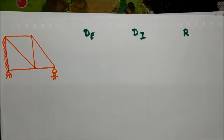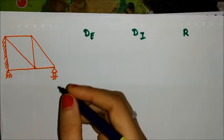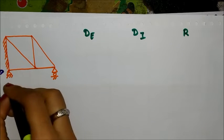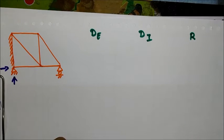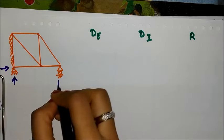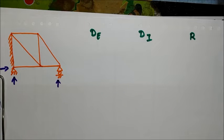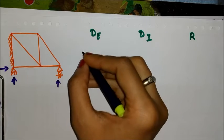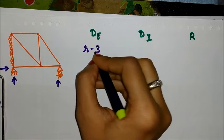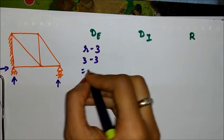Now let's take another truss. This is another type of truss. Again I am providing one hinge and the other support is a roller. The hinge will give you two support reactions and the roller will give you one reaction, so DE equals r minus 3, which is three minus three, equal to zero.